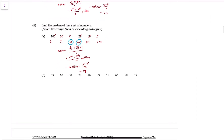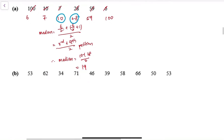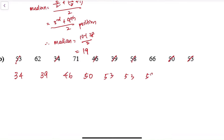Last time we finished arranging numbers and finding the median for an even number of data. I'm going to do the next question here. Every time when you arrange numbers, keep the good habit of writing down a number and cancelling it so you don't miss anything or repeat a number. I'll write down all the numbers from smallest to largest. You see that 53 appears twice, so you just write it twice — that's okay.